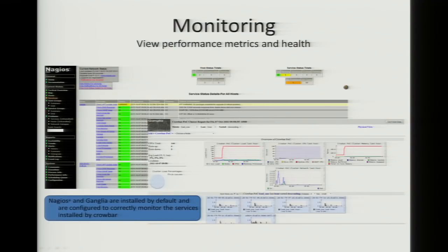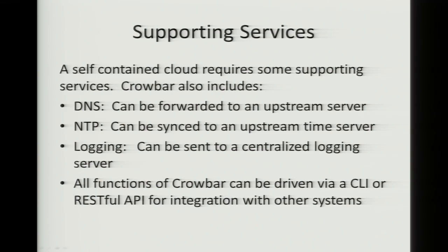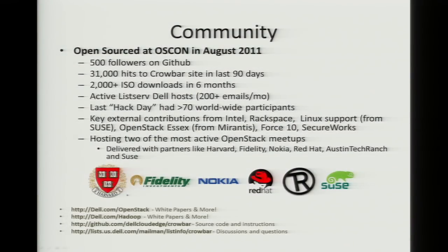Nagios and Ganglia are actually modified at deploy time to monitor the appropriate things being deployed. If you pick a non-standard port and one of the monitors is an active port monitor, it will modify itself and the deployment to monitor that appropriate port — which is pretty cool. Supporting services include DNS, NTP, a logging service, and then the CLI and APIs.